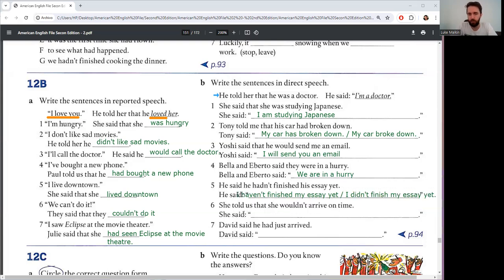Number six. She told us she wouldn't arrive on time. She said I won't arrive on time. Will and won't, or would and wouldn't.